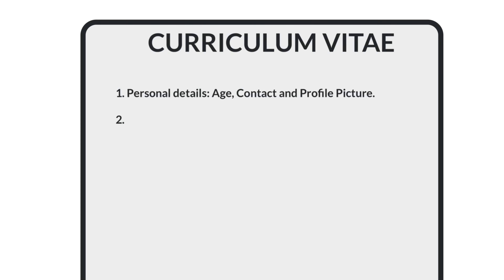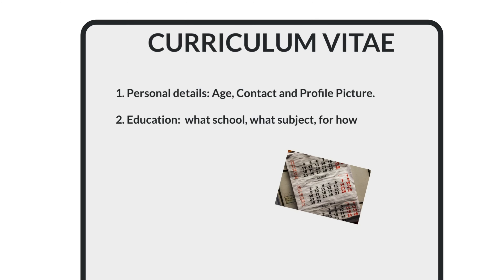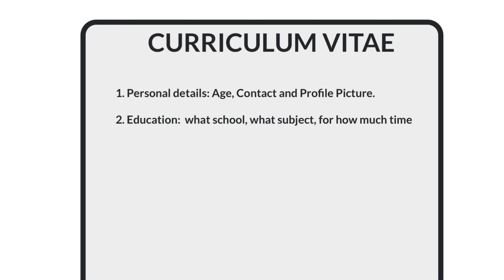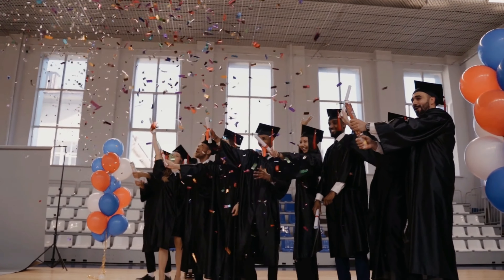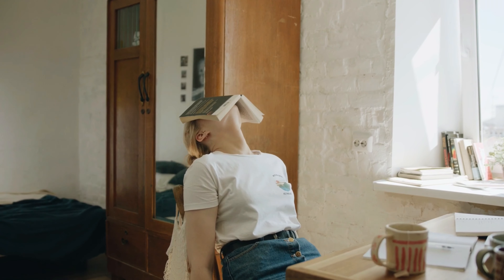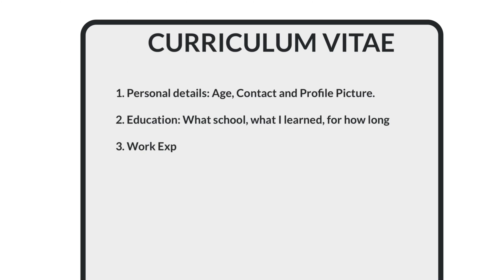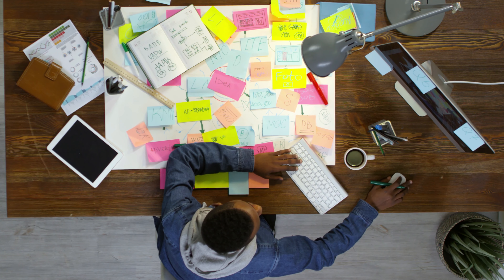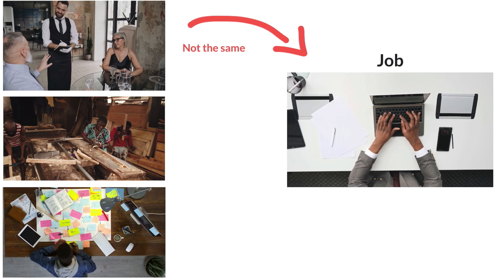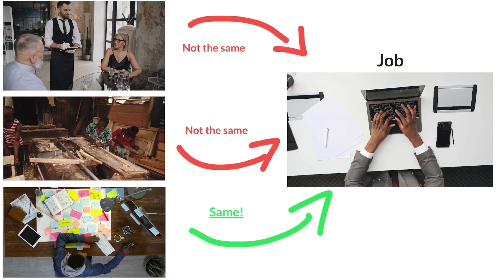The second thing you should think of is your education — what school you went to and what you learned exactly, and for how many years. This also includes education after school, like university or some kind of training. The third is work experience. Any experiences you had working will be appreciated, but you should focus more on the work that is similar to the job you are applying to.